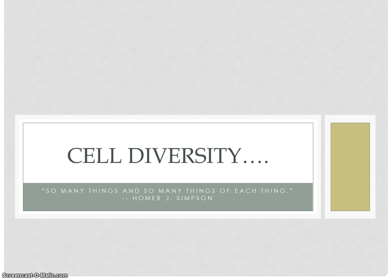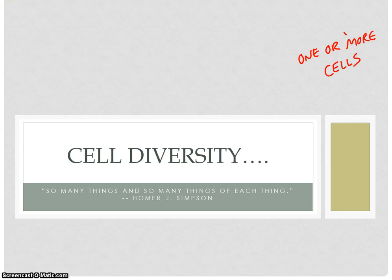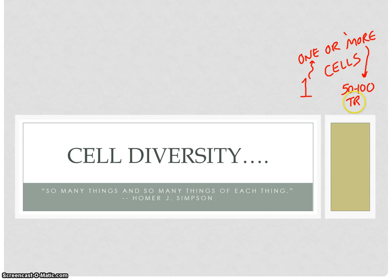If you remember back in the beginning of the class, right on day two or three, one of our major characteristics we said is that all living things must be made up of one — at least one, one or more cells. You could be a single-celled organism if you're just one cell, or you could be something like a human, where we are 50 to 100, perhaps — no one really knows — an estimated trillion cells.